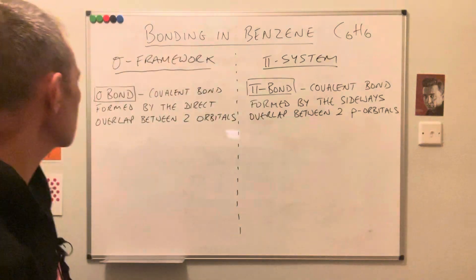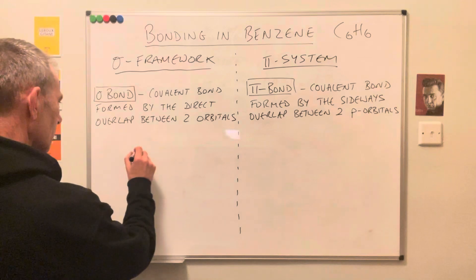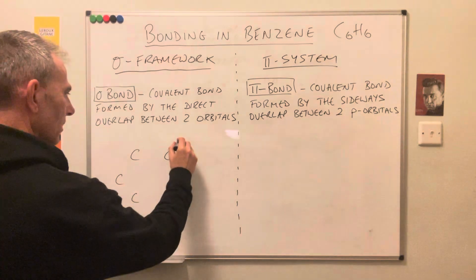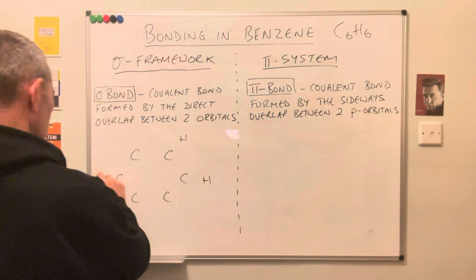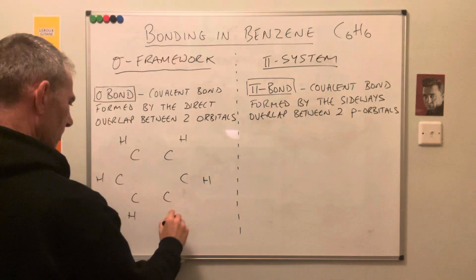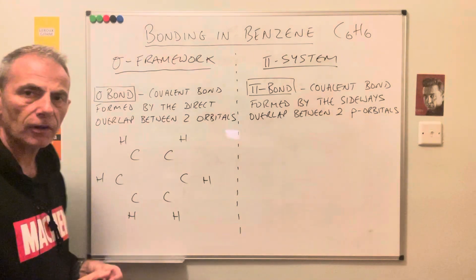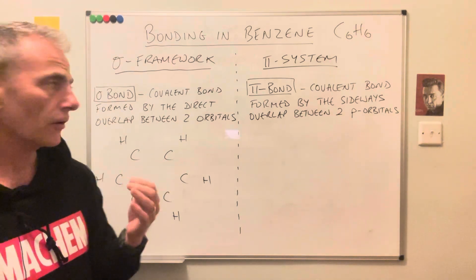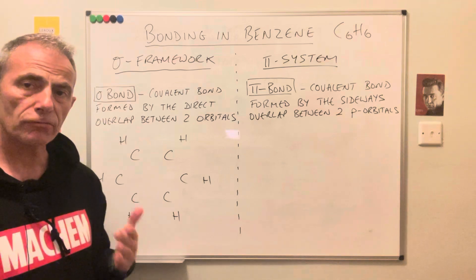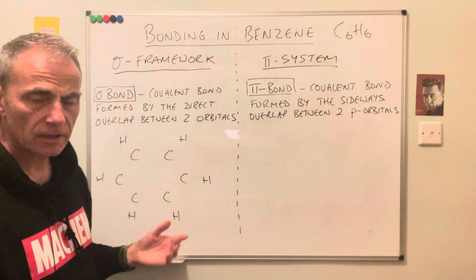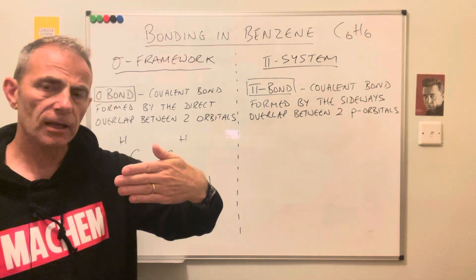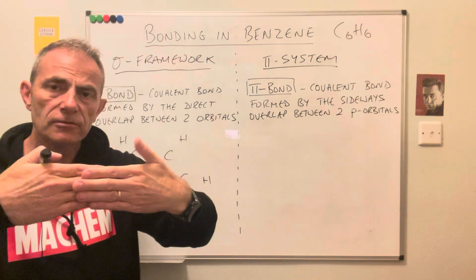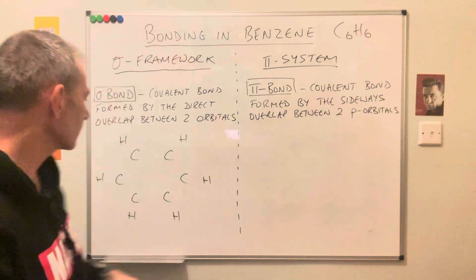We'll deal with the sigma framework first, so I'm just going to draw up the six carbon atoms. We've got this hexagonal ring — I'm not going to connect them yet because that's the whole point of the video — and we've got the hydrogens. The sigma framework involves three of the four outer electrons. Carbon is in group four so it's got four valence electrons, and it uses three of them to form three sigma bonds. If my hand is an orbital with an electron in, and this hand is another orbital, they overlap directly end to end and you've got a shared pair of electrons in this region of space.